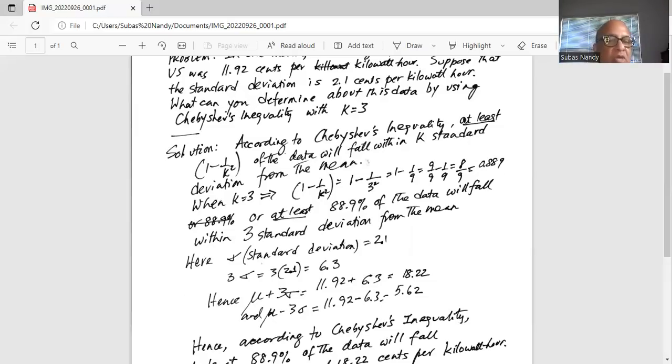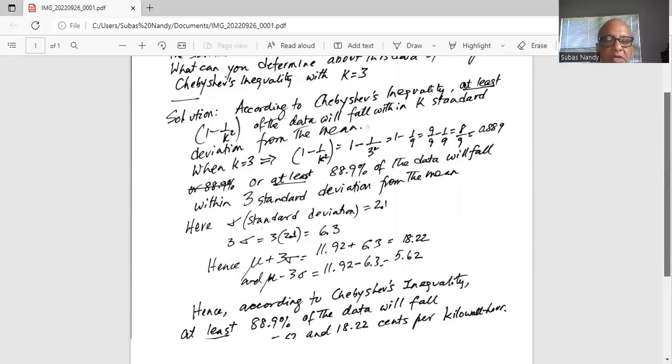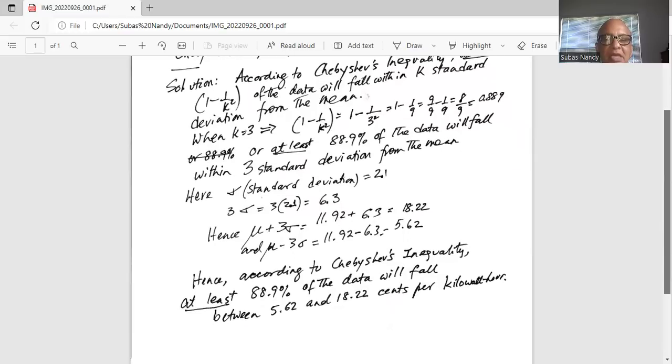Here mu indicates the population mean. Hence, according to Chebyshev's inequality, at least 88.9 percent of the data will fall between 5.62 and 18.22 cents per kilowatt hour. I will stop here today.